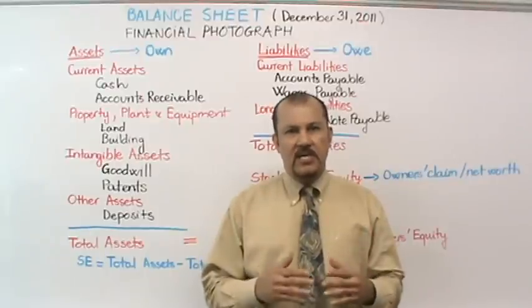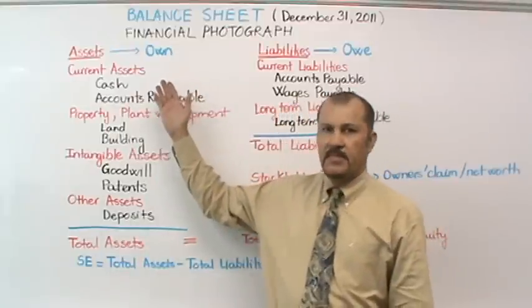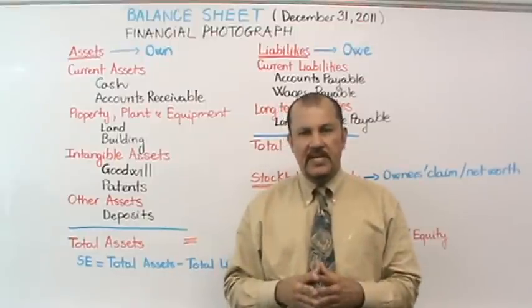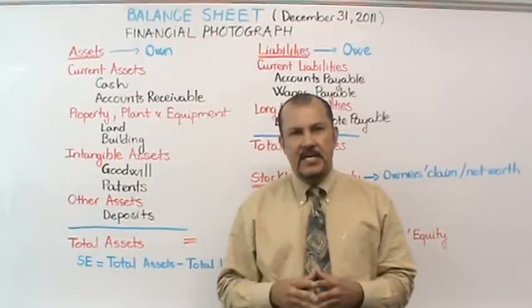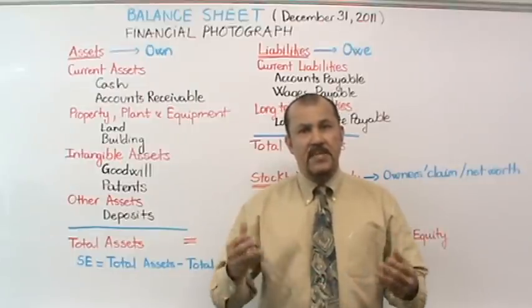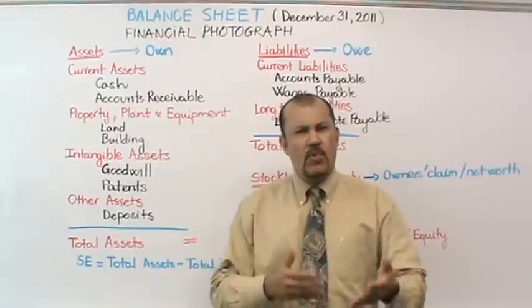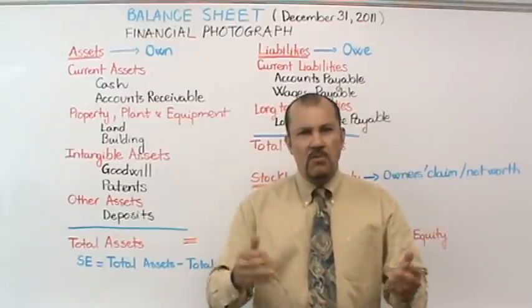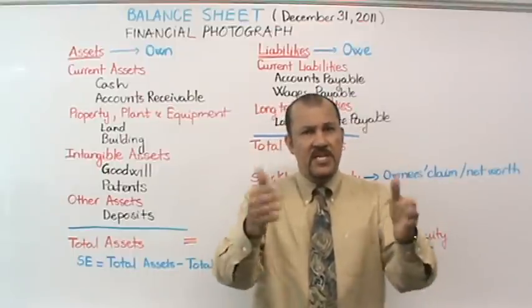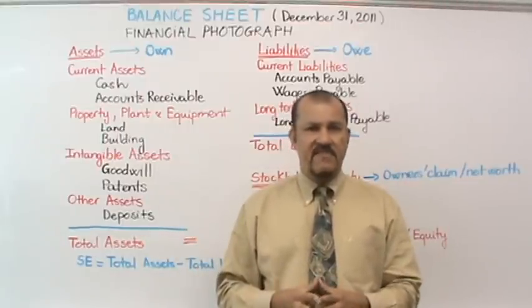The balance sheet is broadly classified into three main sections: assets, liabilities, and stockholders' equity, also called shareholders' equity. A one-word working definition of an asset is something that a company owns. Just as you own a number of things in your personal life — clothes, a car, maybe more than one car, a house — all of these are your assets. Similarly, a company can own a number of different items as well.